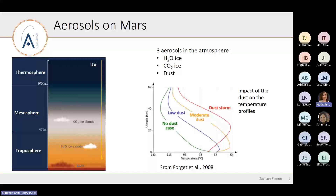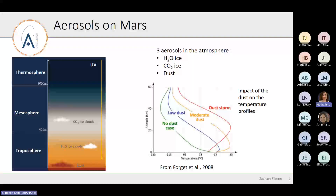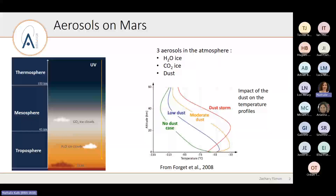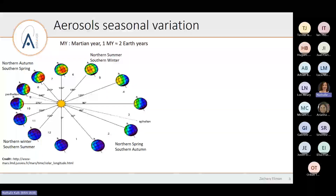On Mars we have three types of aerosols: H2O ice, CO2 ice, and dust. Usually we find dust close to the surface in the troposphere, and H2O ice clouds are found at higher altitude. It's important to study aerosols because they have a big impact on the atmosphere. This plot from Fonger et al. shows temperature profiles versus altitude simulated with no dust, a bit of dust, more dust, and during a dust storm. The more dust you have, the higher the temperature can increase, and during a dust storm the temperature profiles change a lot. So having information on the amount of dust and the vertical structure is really important for Mars.